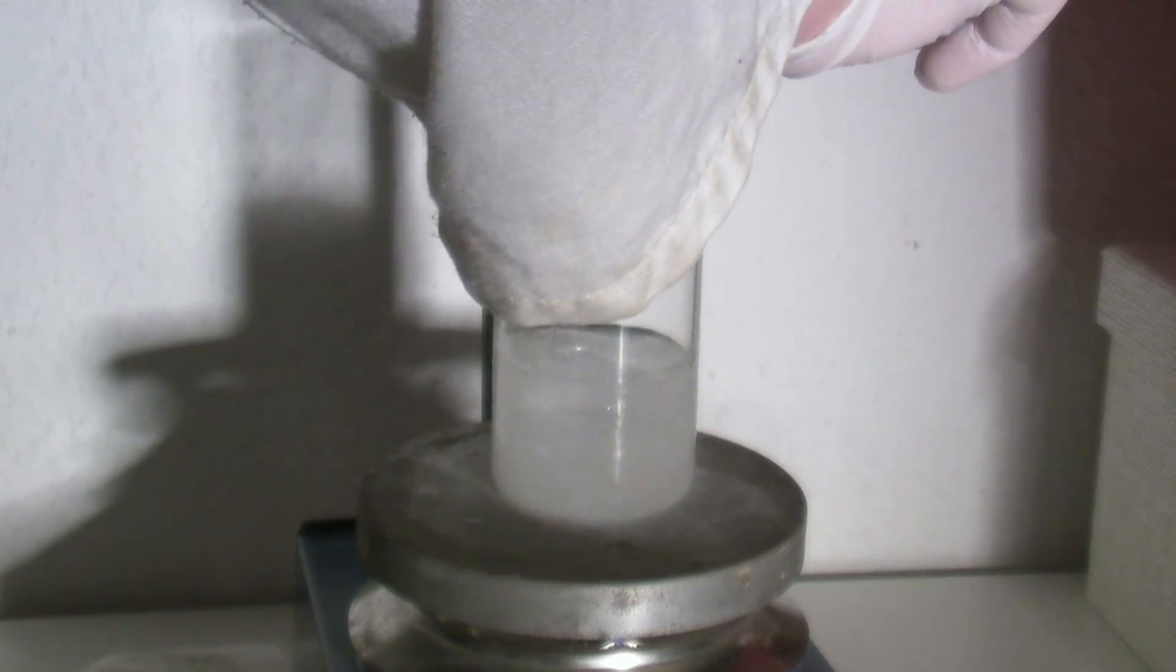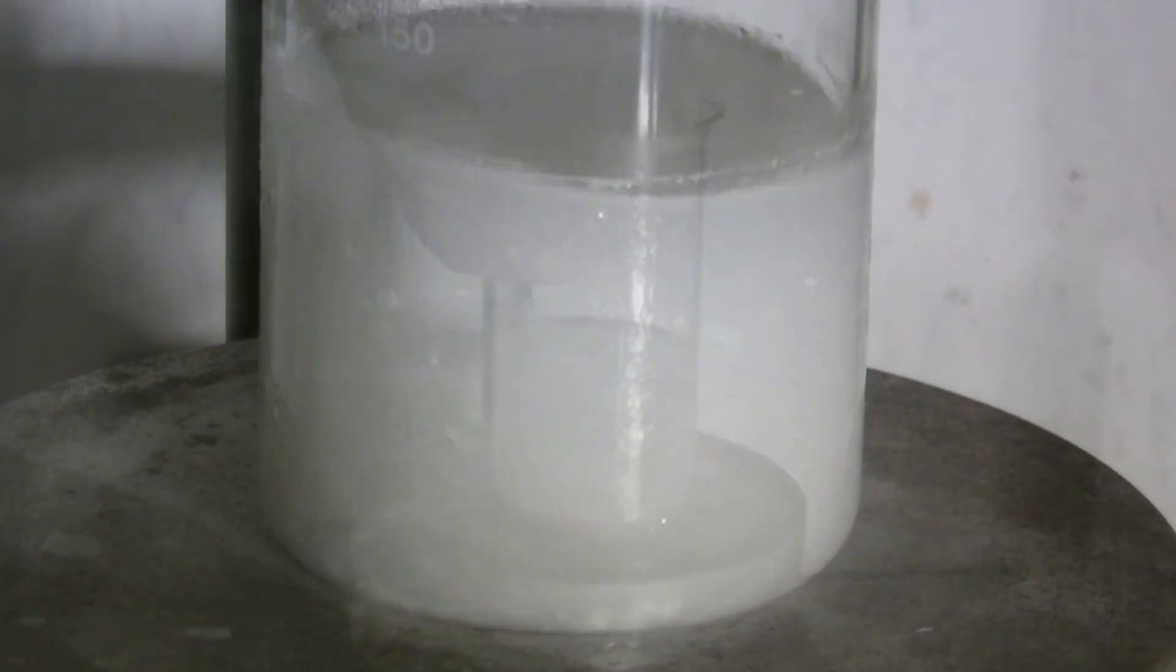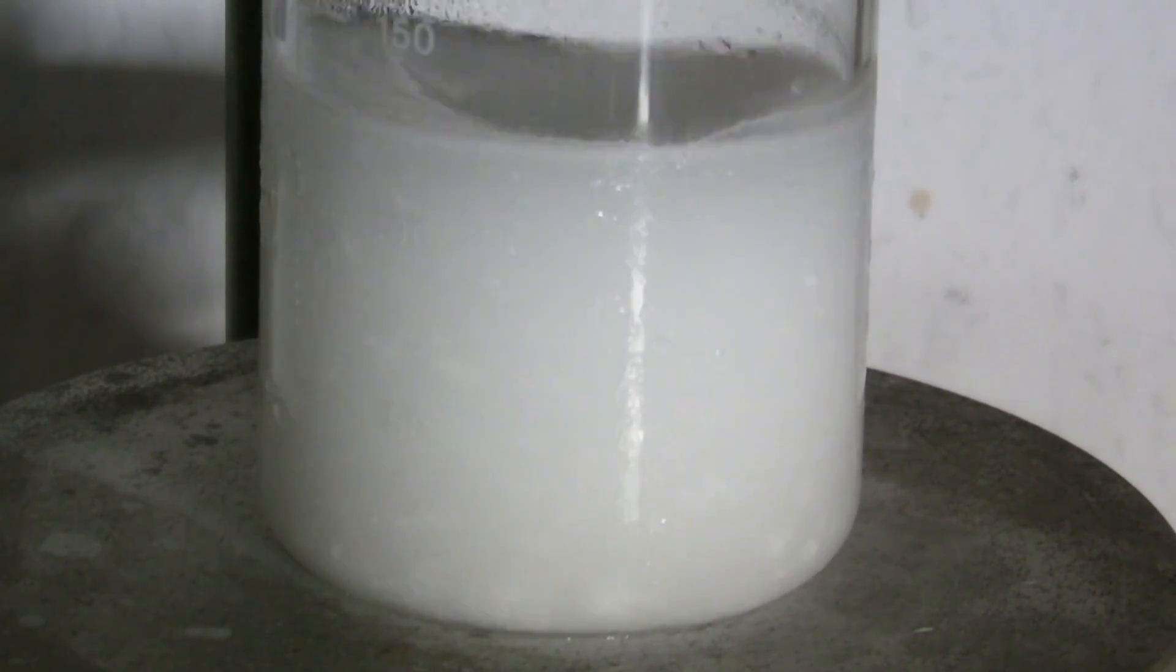This will cause residues of acetic anhydride to hydrolyze and the sulfuric acid and acetic acid get into solution. The acetyl salicylic acid will precipitate out because of its low solubility in cold water. When the amount of precipitate stays constant, the product can be filtered off.